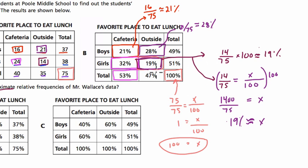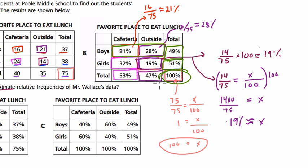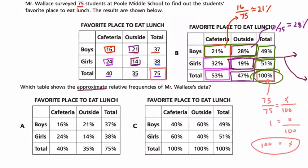To fill in from there: 47% is the total who like to go outside. Reading by rows, the total amount of boys in cafeteria and outside adds to 49%, so 49% of the population are boys. Reading the girls' row — 32 plus 19 — gives 51%, meaning 51% of the population are girls. Reading by columns gives totals for cafeteria and outside; reading by rows gives totals by gender. The grand total cell always shows 100%.